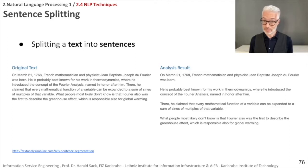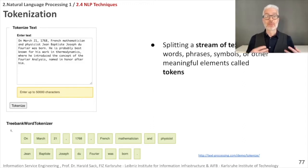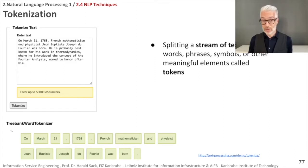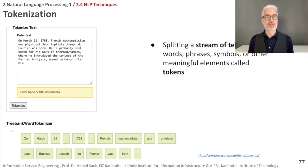You might also want to split a stream of text into words, phrases, symbols, and other meaningful elements. These kinds of elements are called tokens, and therefore this process is called tokenization. We have provided screenshots of tools as well as links, so if you click on the links in the slides, you will go directly to the web page of the corresponding tool and try it out.